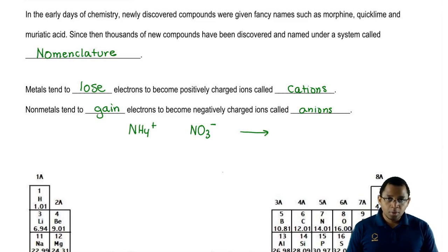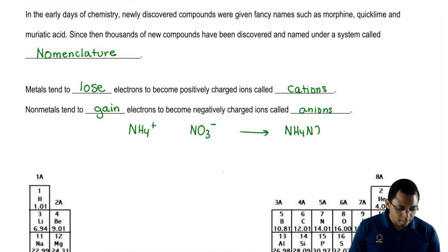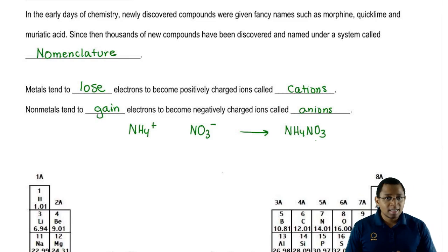Since they're opposing charges, they're going to be attracted to one another. They would form this compound. It's not always true that an ionic compound is between a metal and a nonmetal. You most likely won't see things this complex initially.